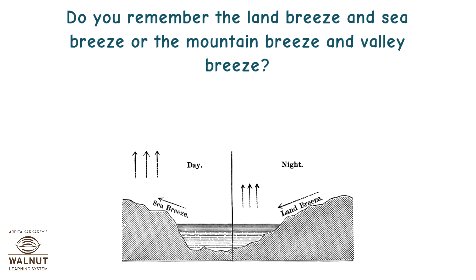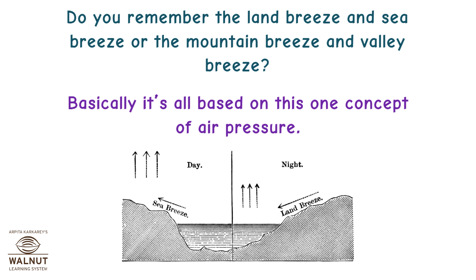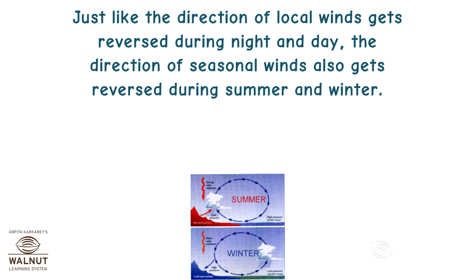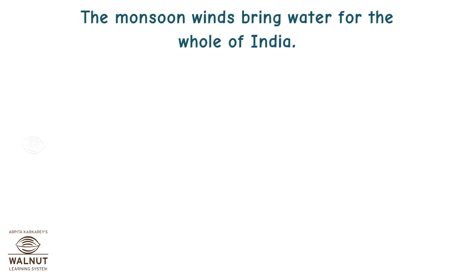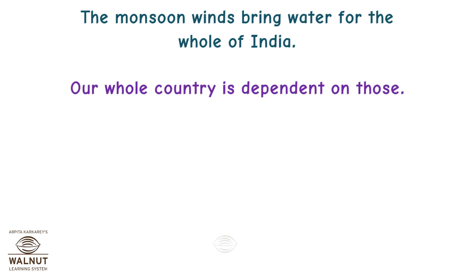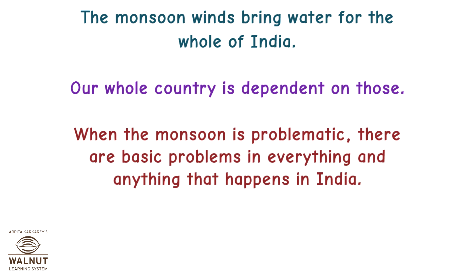Do you remember the land breeze and sea breeze, or the mountain breeze and valley breeze? Basically, it's all based on this one concept of air pressure. Just like the direction of local winds gets reversed during night and day, the direction of seasonal winds also gets reversed during summer and winter. Since it changes with seasons, these are called seasonal winds. The monsoon winds bring water for the whole of India — our whole country is dependent on those. When the monsoon is problematic, there are basic problems in everything that happens in India.